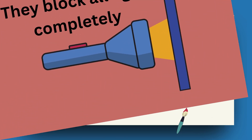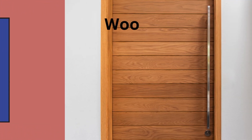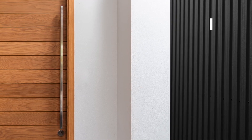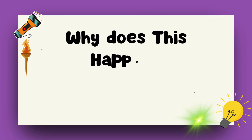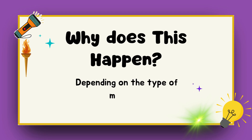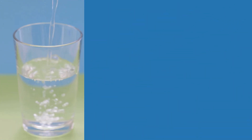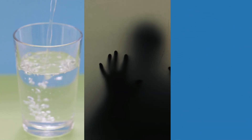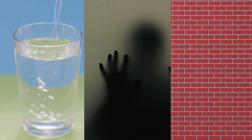Opaque objects say no way to light — they block it completely, like a wooden door, an iron sheet, or a thick book. It's all about the material. Transparent materials have molecules that let light zoom through. Translucent ones scatter light, and opaque ones stop it dead in its tracks.